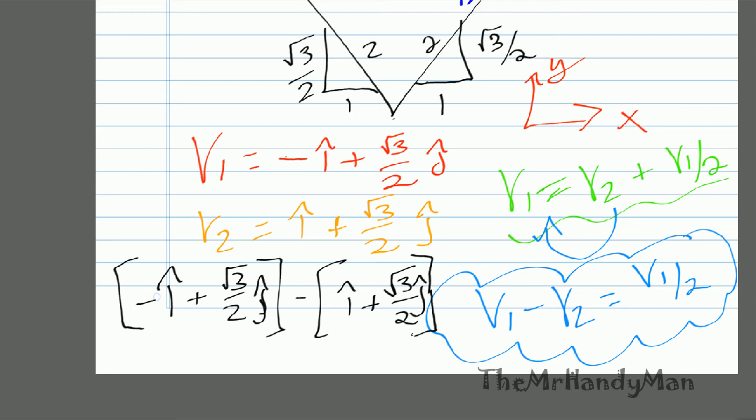If we look here, j's, they cancel out. √3 over 2 minus √3 over 2, they're out. But if we focus on this real quick,